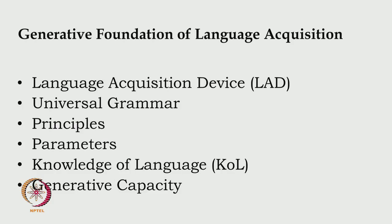When we look at the specifics of the generative foundation of language acquisition — everything we have been discussing — it is part of the generative foundation: language acquisition device, universal grammar, principles, parameters, knowledge of language, and generative capacity. These are the terms we have been using to understand how learning takes place, and they are going to be like normal vocabulary. Pay attention to the last one — generative capacity and generative mechanism — there is an overlap, but a little clarity is required.